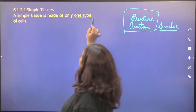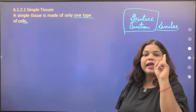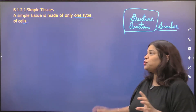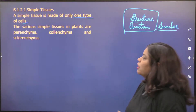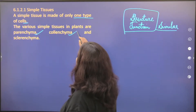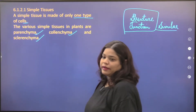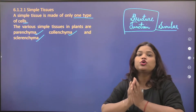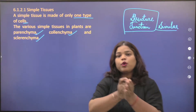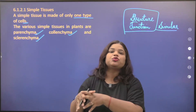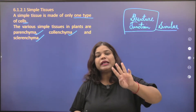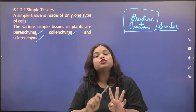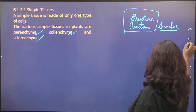A simple tissue is made up of only one type of cells. The various simple tissues in plants are parenchyma, colenchyma, and sclerenchyma — three types of simple tissues, each forming groups. Parenchyma stores food, and we will see it first.